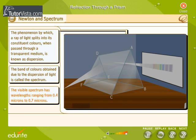This visible spectrum has wavelengths ranging from 0.4 microns to 0.7 microns. Red light has a longer wavelength than violet light.